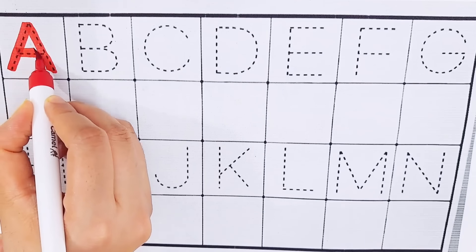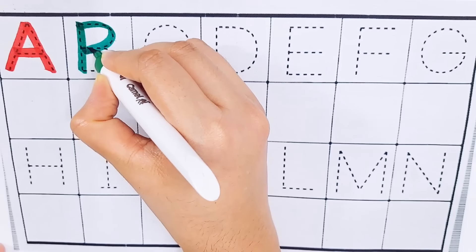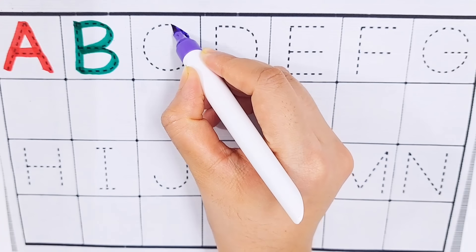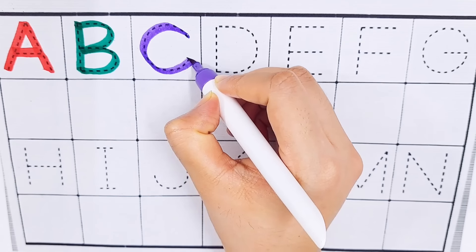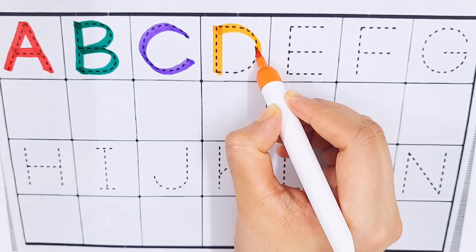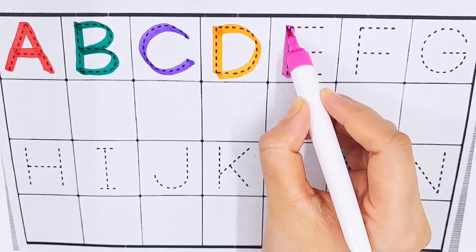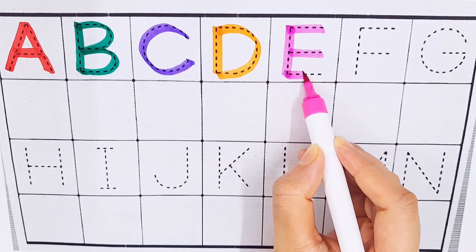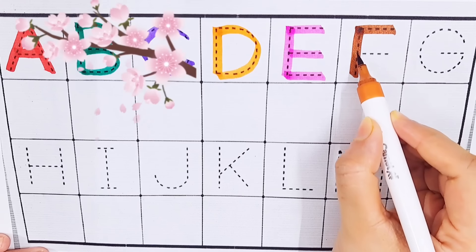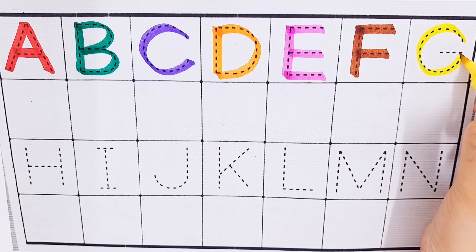Let's learn some alphabets. A A for apple, B B for ball, C C for cake, D D for doll, E E for eggplant, F F for flowers, G G for grapes.